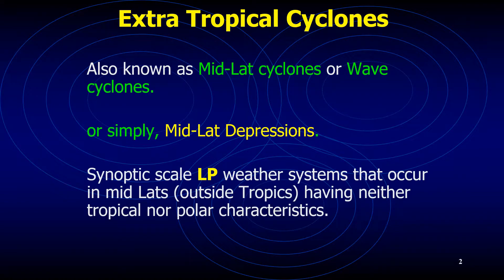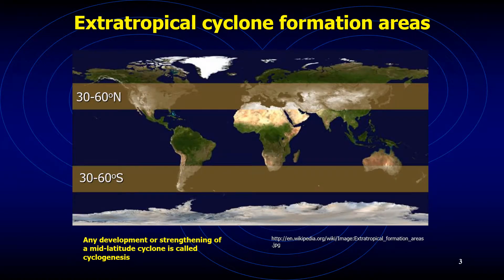Let's get started with the formation of extra-tropical cyclones. Any development or strengthening of a mid-latitude cyclone is called cyclogenesis. Regions of North America that show a propensity for cyclogenesis include the Gulf of Mexico, the Atlantic Ocean east of the Carolinas, and the eastern slopes of high mountain ranges such as the Rockies and the Sierra Nevada. When a westerly flow of air crosses a north-to-south trending mountain range,